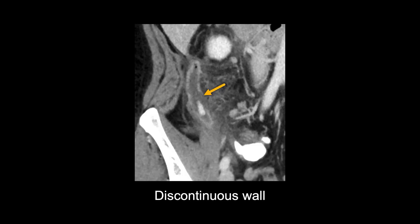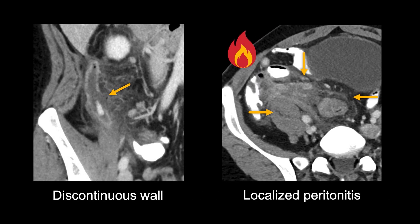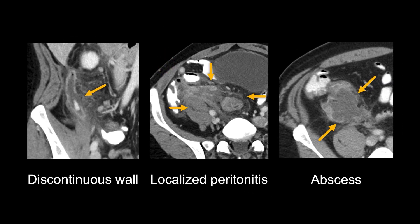There are three essential imaging findings that will help you characterize complications related to rupture or perforation of the appendix. First, the thin, enhancing wall of the appendix will become discontinuous at the site of perforation. You will also see a large amount of inflammation in the right lower quadrant affecting nearby structures, which can be described as localized peritonitis. Lastly, abscess formation will occur from the contents that leaked out of the ruptured appendix — a fluid density collection with a variably thick and enhancing wall depending upon how organized or walled off the collection is.